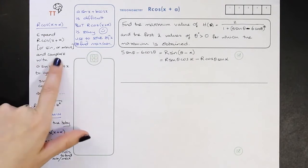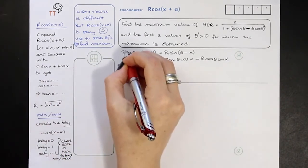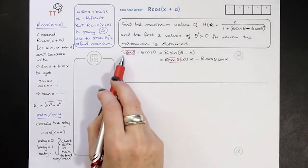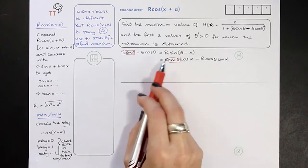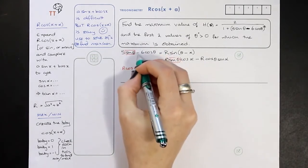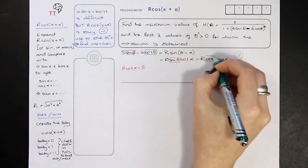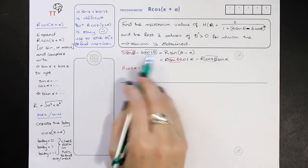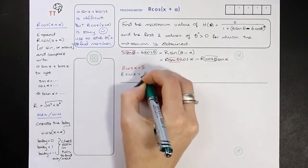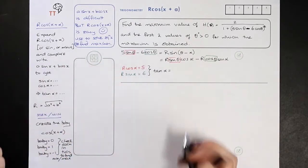Now we're going to compare with the original. They're really, really similar. Here we've got a sin(θ) and here we've got a sin(θ), so the amount of sin(θ) here must equal the amount of sin(θ) here, which means R·cos(α) must equal 5. We've got a minus and a minus so they match up. Here we've got a cos(θ) and here we've got a cos(θ), so the amount of cos(θ) here, which is 6 — we can ignore the minus because they match — must equal R·sin(α). That allows us to create tan(α) by putting one on top of the other and cancelling the R's.